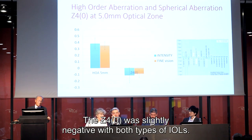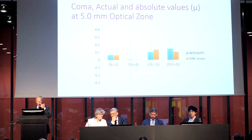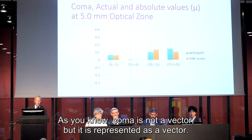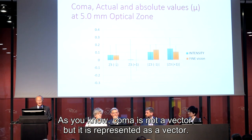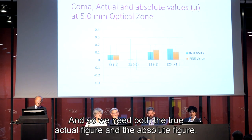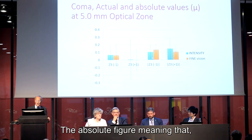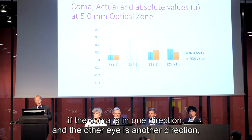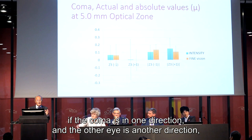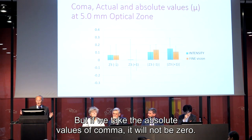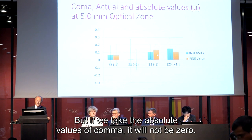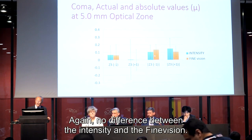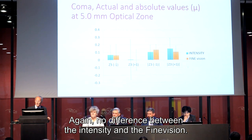The Z40 was slightly negative with both types of IOLs. What about coma? As you know, coma is not a vector, but it is represented as a vector, and so we need both the actual figure and the absolute figure. The absolute figure meaning that if the coma is in one direction for one eye and the other eye is in another direction, the net result will be zero, but if we take the absolute values of coma it will be a little bit higher. Again, no difference between the Intensity and the Fine Vision.